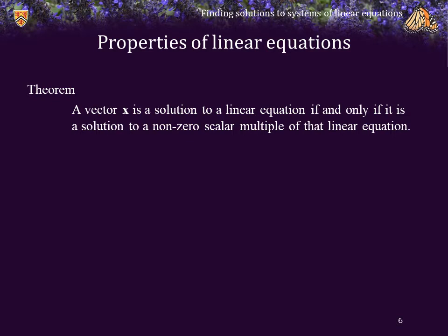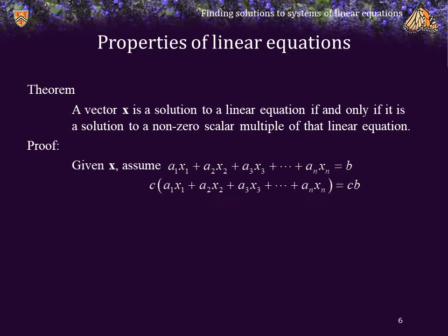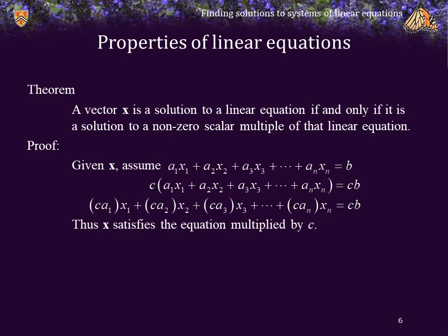Theorem. A vector x is a solution to a linear equation if and only if it is a solution to a non-zero scalar multiple of that linear equation. Proof. Given x, assume that it is a solution of this equation — that is, for the values of x, that equation holds and both sides are equal. Consequently, if two things are equal, I can multiply both sides by any constant and the result is still equal. On the left-hand side, I can use the distributive and associative properties to get that this must also be true, and so therefore x must also satisfy the equation where each of the coefficients is multiplied by c.